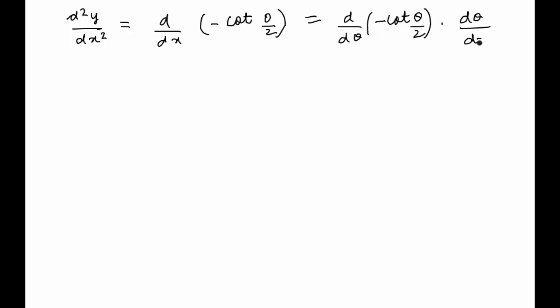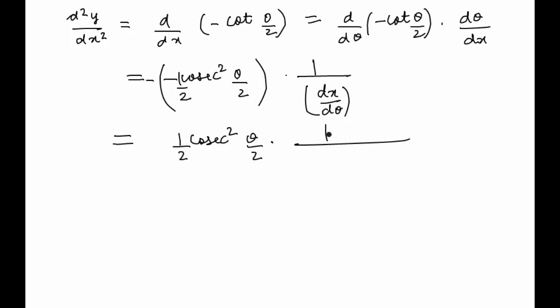We have just introduced dθ here. So here we get minus cosec squared theta by 2, with half outside, and minus was already there, times dθ/dx. This can also be seen as 1 by dx/dθ. This gives us half cosec squared theta by 2 times 1/dθ. We already knew dx/dθ is a times 1 minus cos theta.